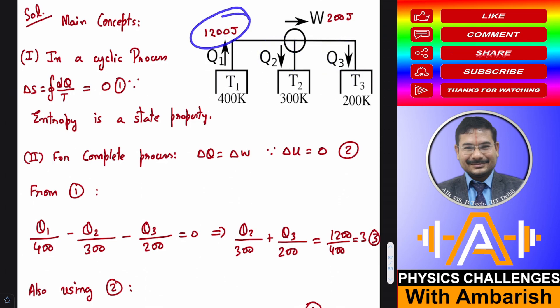And this is given as 1200 joule and total work done is given as 200. So if I just rearrange this equation, I just put value of Q1 as 1200 and rearrange this equation. What do I get?